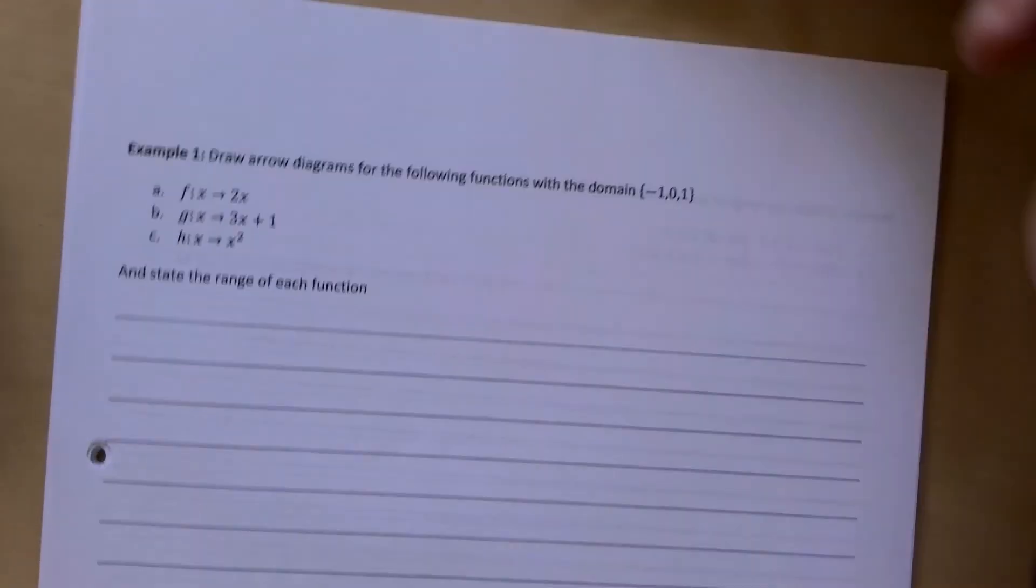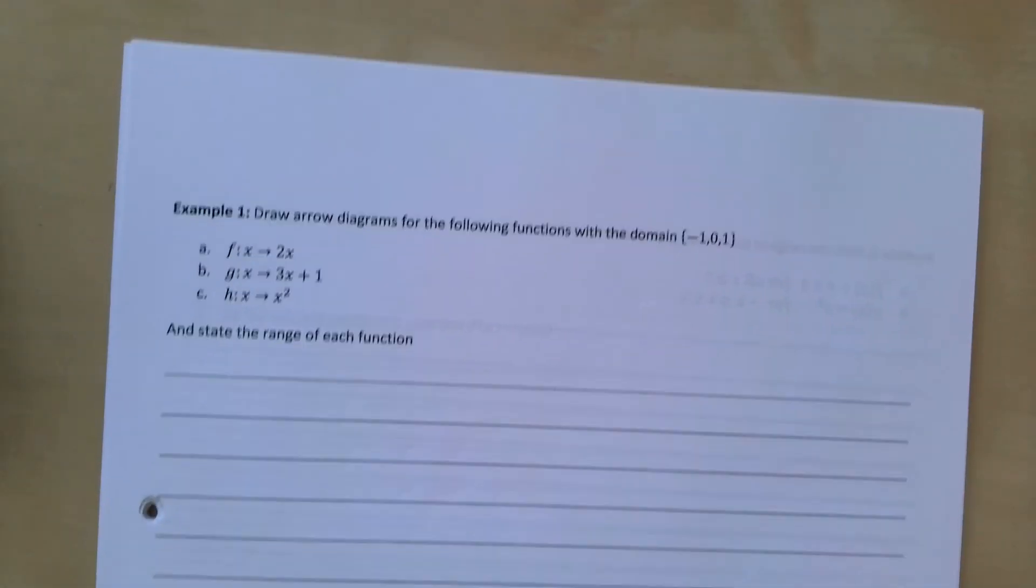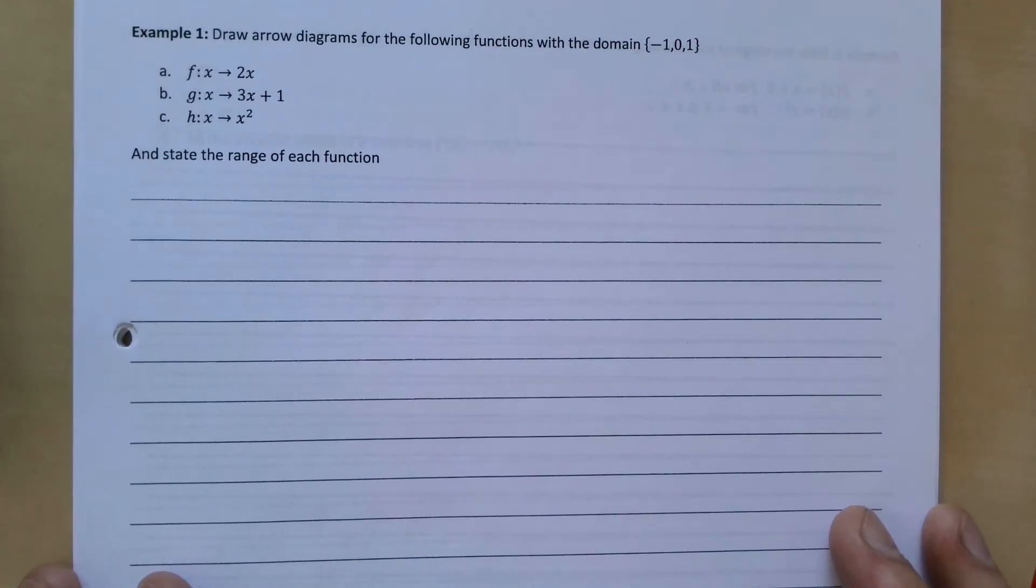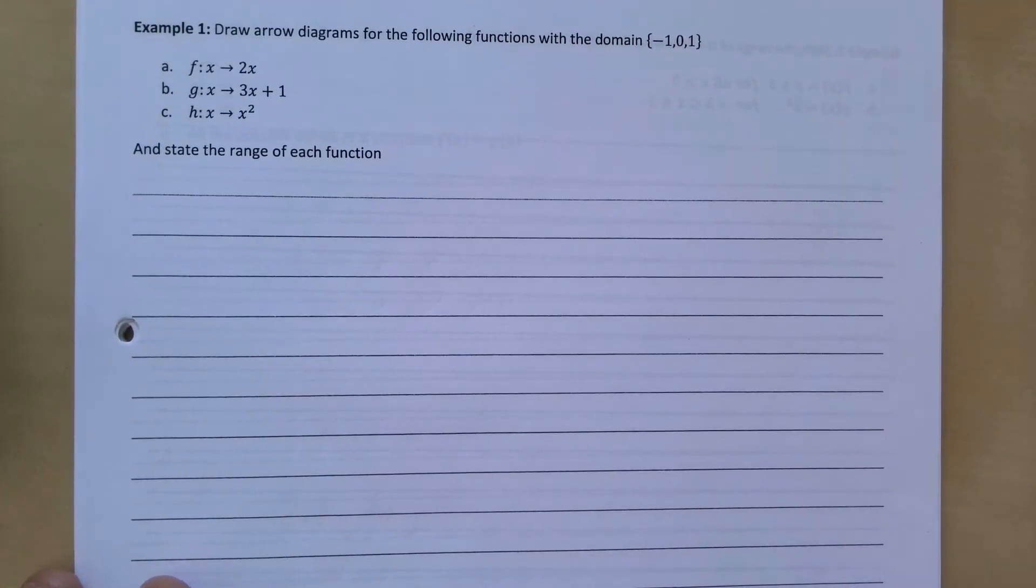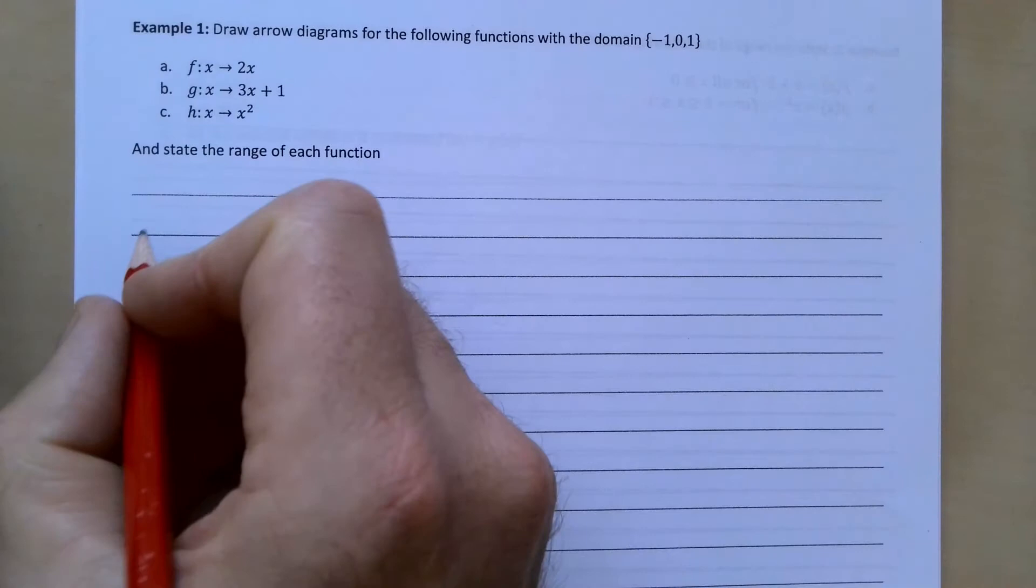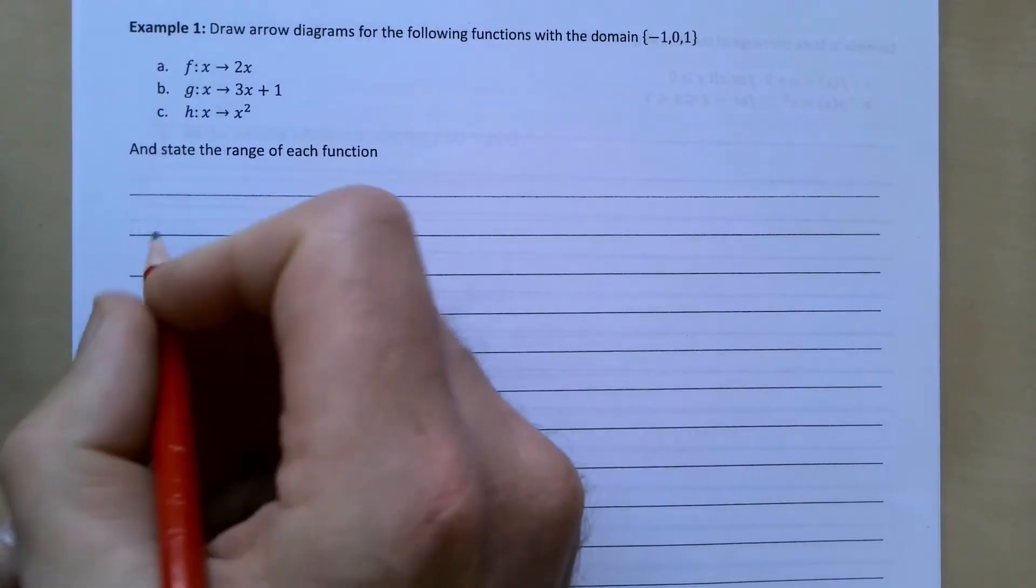So let's take a look at a couple of examples. Draw arrow diagrams for the following functions with the domain {-1, 0, 1}. For part (a), it says to state the range of each function.